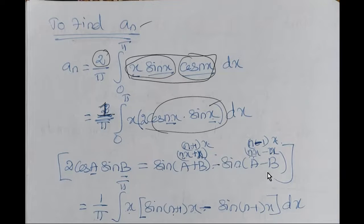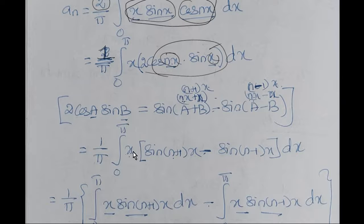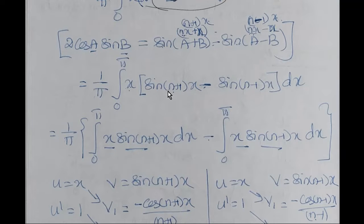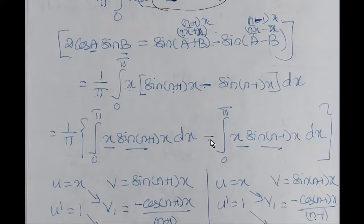Using the identity 2·cos(A)·sin(B) = sin(A+B) − sin(A−B) with A = nx and B = x, we get 2·cos(nx)·sin(x) = sin(n+1)x − sin(n−1)x. Therefore aₙ = (1/π)·∫₀^π x·[sin(n+1)x − sin(n−1)x] dx.